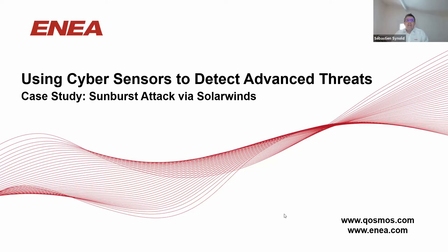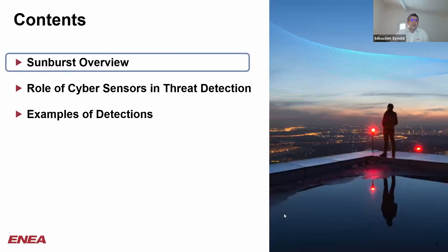Today I will be talking about a recent attack named Sunburst that compromised many US organizations last year, resulting in leakage of very sensitive data from critical infrastructures. I will also discuss measures that could have been taken to detect such an attack earlier. First, we will detail how this attack happened and what mechanism it used to spread itself across networks.